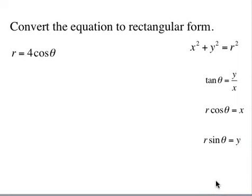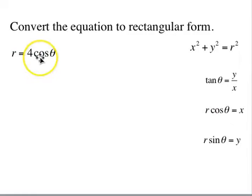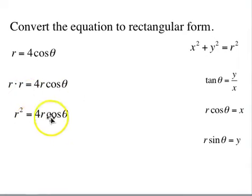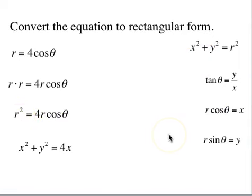Next: r = 4·cos θ. Squaring both sides won't work here, but multiplying both sides by r will. r·r = 4·r·cos θ, so r² = 4·r·cos θ. We know r² = x²+y² and r·cos θ = x, so this becomes x²+y² = 4x. We could bring 4x to the left side, complete the square, and find the center and radius — but this is sufficient. We've converted the equation to rectangular form.